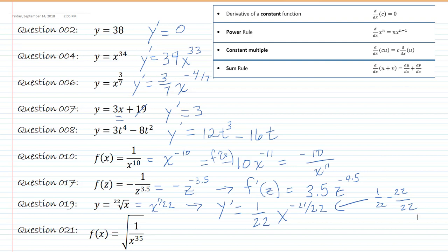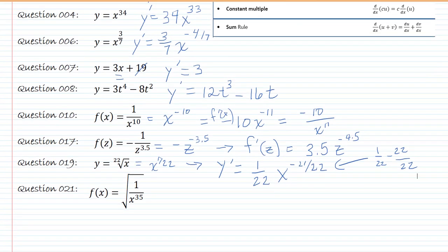Okay, now this next one might take a couple of steps to actually get in a format that I can actually write in. So the first thing I'm going to do is say, well, that's the same thing as 1 over x to the 35th power to the 1 half, because square root is 1 half.